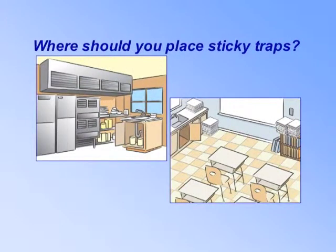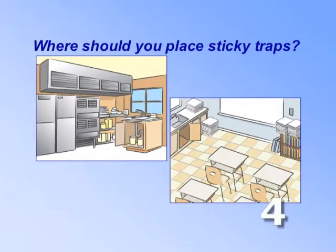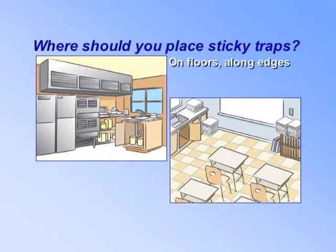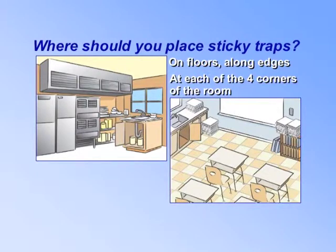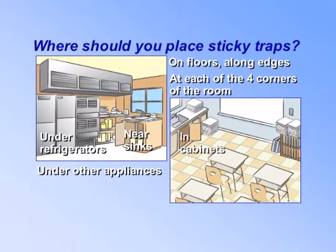Where should you place sticky traps? Place traps on floors along the edges, and place them at each of the four corners of the room. In kitchens, place traps near sinks, under refrigerators, and under other appliances. In classrooms, place them in cabinets, near bookshelves, and near clutter.